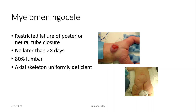In myelomeningocele, there is a restricted failure of posterior neural tube closure. The neural tube closes until it reaches the lumbar area, where there is arrest of that closure, leading to failure of further development of the spinal cord. It is an early defect, no later than 28 days of gestation. The majority are lumbar. In all of these situations the skeleton is deficient, with no vertebrae below the level of the lesion.